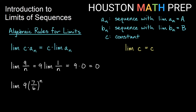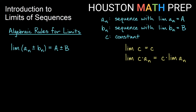The next few rules say that limits obey arithmetic. If I have the limit of one sequence plus or minus another, I can just add or subtract those limits — take the limit of each term separately. This works for addition and subtraction, just as it does with sums, derivatives, and antiderivatives.